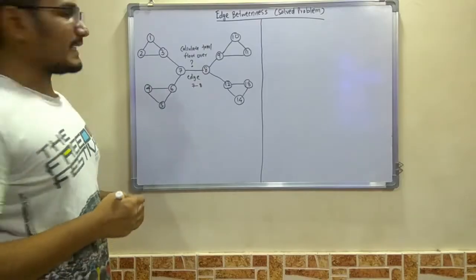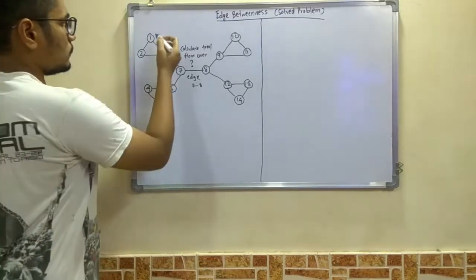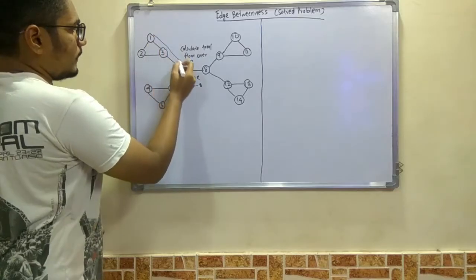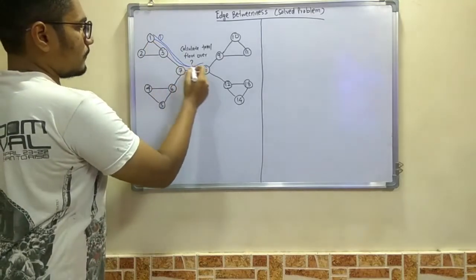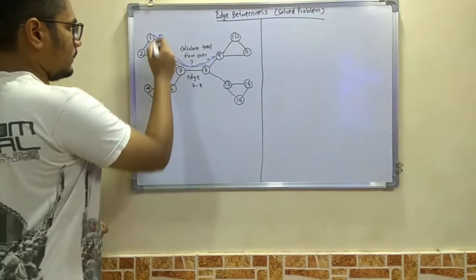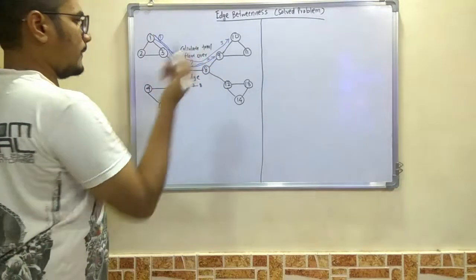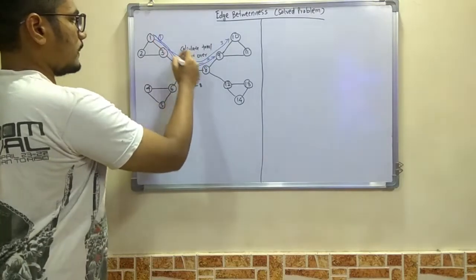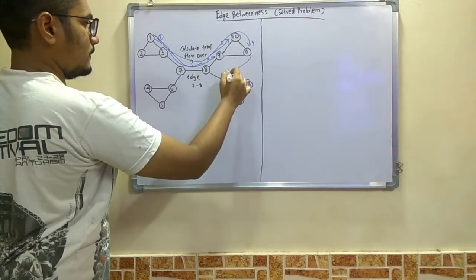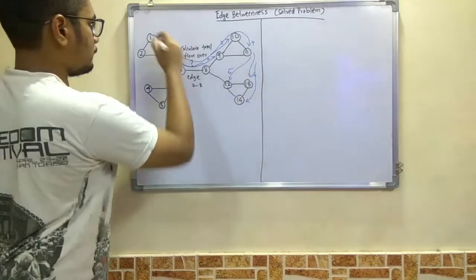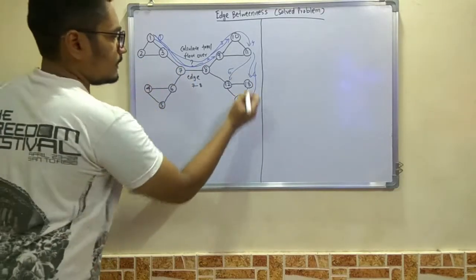First let us begin by considering the very first node as the start node. In total there are 14 different nodes available in this graph. Beginning with node 1, we can completely traverse from 1 to 8 — that is one path. The second path goes to 9, the third to 10, and many more paths can be traversed up to nodes 11, 12, 13, and finally from 1 to 14, traversing over edge 7 to 8 — that is the seventh path.